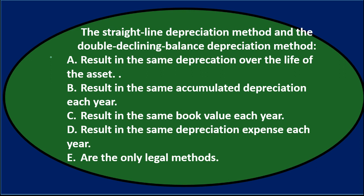Let's go through the options using the process of elimination. The straight line depreciation method and the double declining balance depreciation method — A, result in the same depreciation over the life of the asset. That sounds pretty good, because both methods at the end of the useful life should result in the same total. B, results in the same accumulated depreciation each year, and that will not typically be the case. We're typically going to have different depreciation each year.